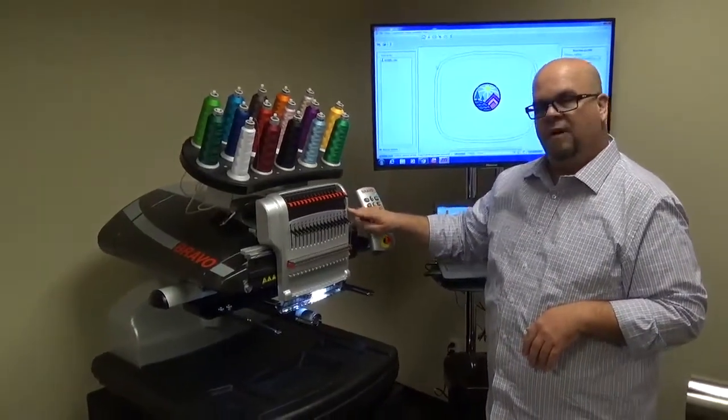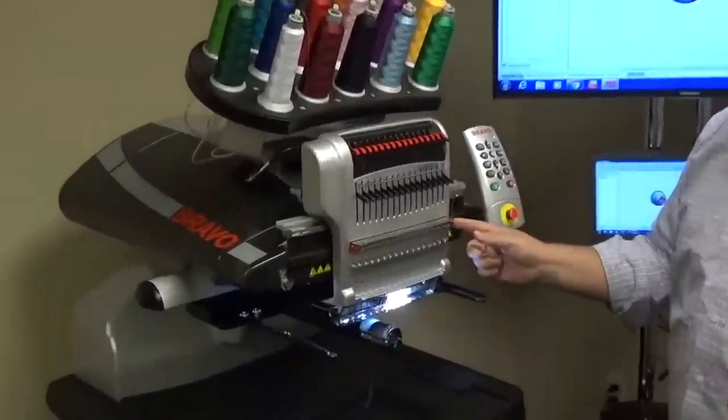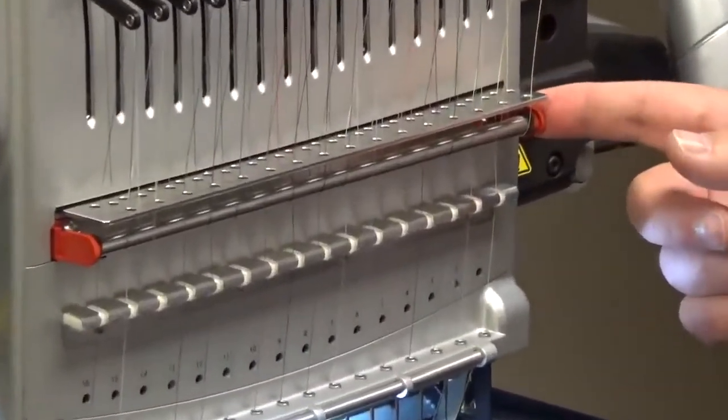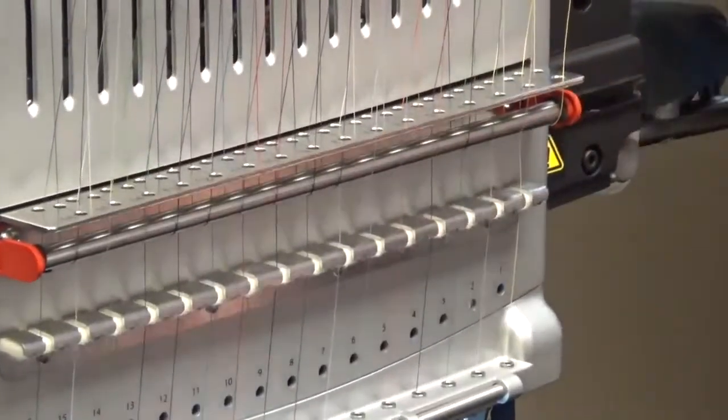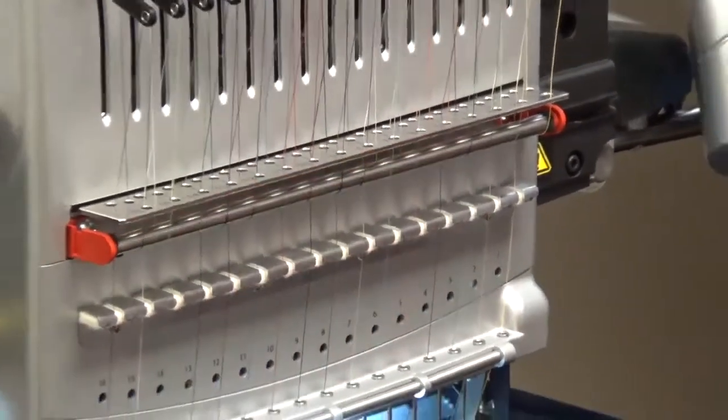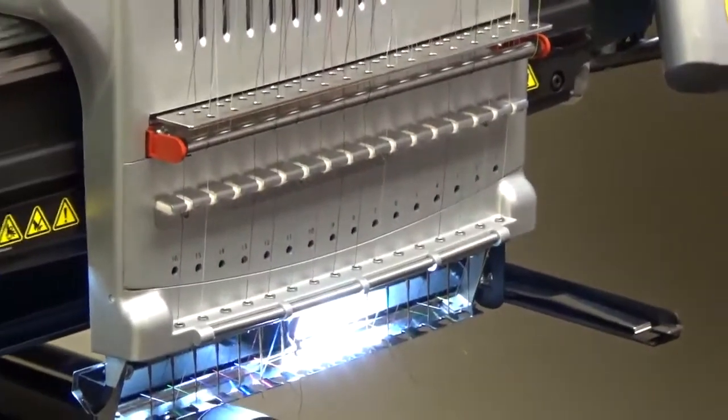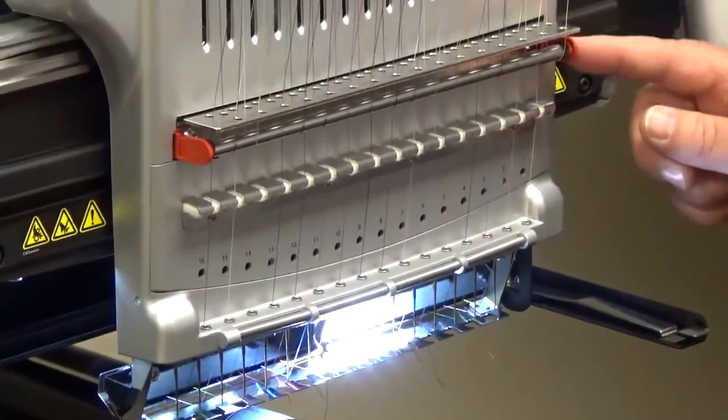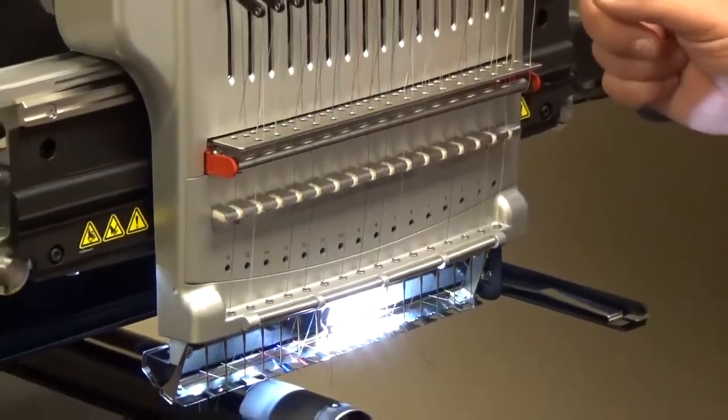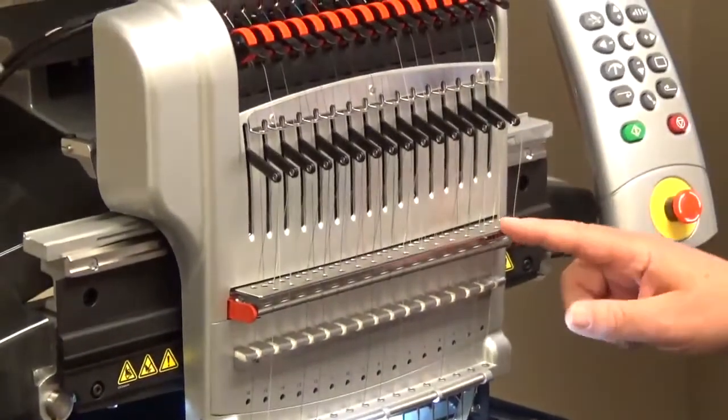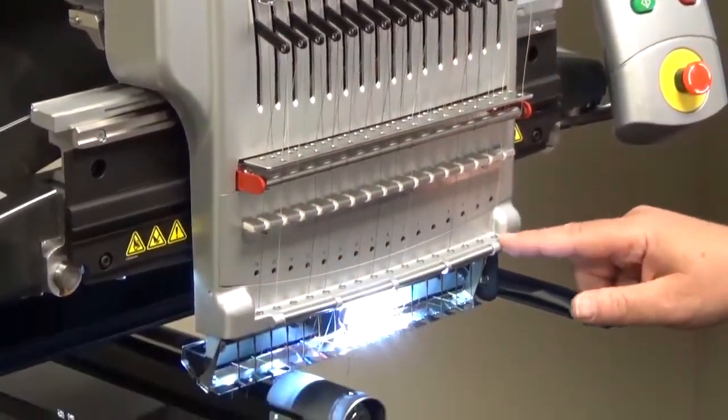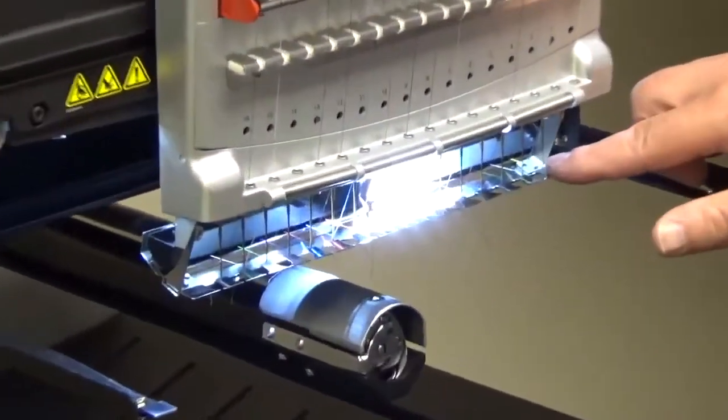So from there, real simple path, the thread goes down. This is our thread break sensor. This actually detects for both the upper threads and the bobbin threads. So there's no chance of getting a dirty bobbin sensor down below and getting false bobbin outs. So it goes around that, comes back up through this plate, goes through the take-up lever, back through the plate, down through this piece of felt to dampen it, and then through the saw and then right through the needle.